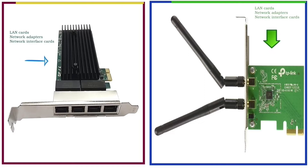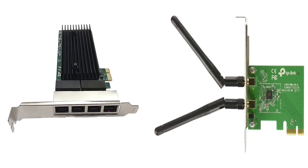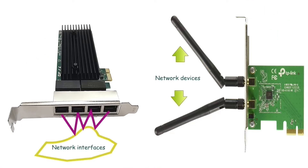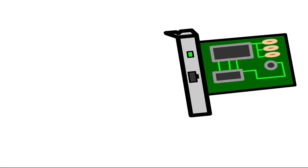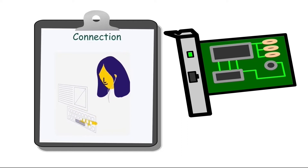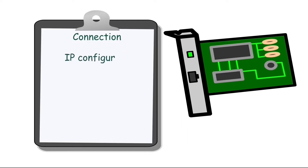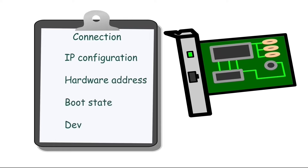LAN cards, network adapters, or network interface cards are hardware adapters that provide one or more Ethernet ports. An Ethernet port is called a network device or a network interface. A network interface uses a connection to connect to the network. A connection is a collection of all settings the interface needs to connect to the network. IP configuration, hardware address, boot state, and device name are some examples of the settings the connection includes.